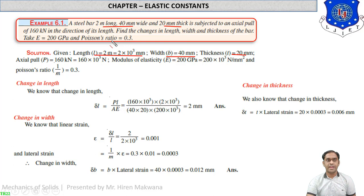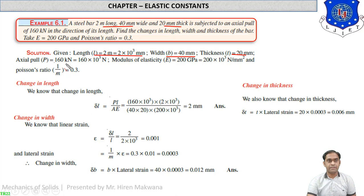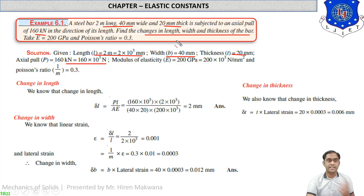Axial means along the length, and pull means tensile force, so length will be increasing while width and thickness will be decreasing. The axial pull is 160 kilonewtons, which equals 160 × 10³ newtons. We need to find the changes in length, width, and thickness: delta-l, delta-b, and delta-t. E equals 200 GPa and Poisson's ratio equals 0.3.